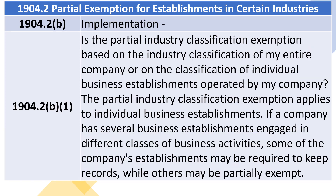1904.2, B — Implementation. 1904.2(b)(1): Is the Partial Industry Classification Exemption based on the industry classification of my entire company or on the classification of individual business establishments operated by my company?